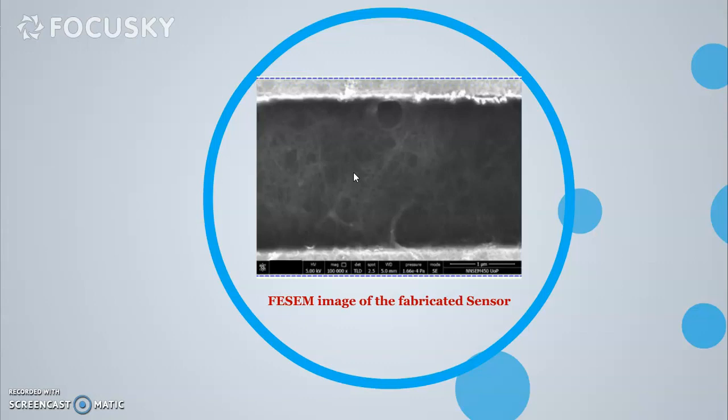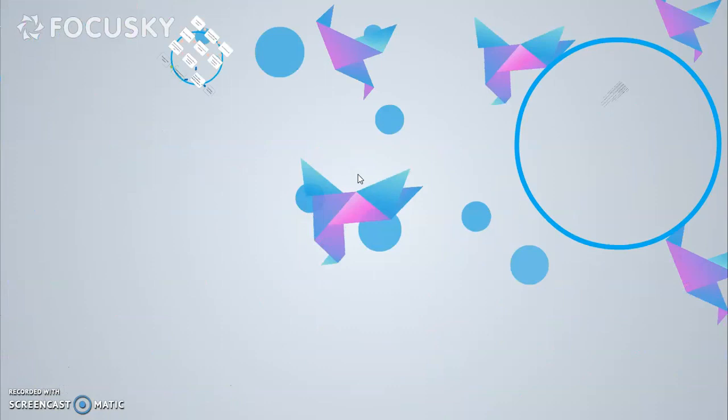This is the FESEM image of the fabricated sensor. Here you can see the sensing materials have coated or bridged the gap that is present between Au electrodes. It has been observed that after functionalization, there is an increase of 20 nanometer as compared to pristine SWNTs.